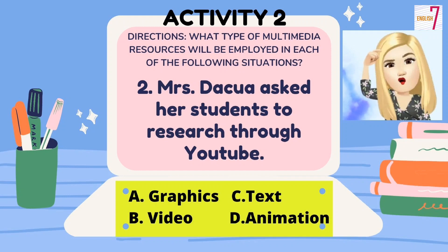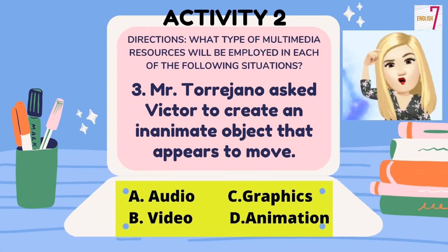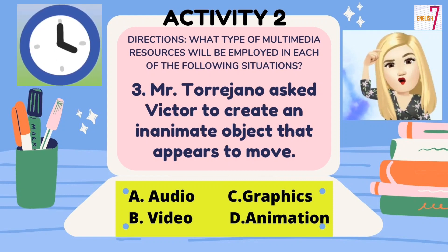Number 2 choices: A. Graphics, B. Video, C. Text, D. Animation. Number 3: Mr. Torrihano asks Victor to create an inanimate object that appears to move. A. Audio, B. Video, C. Graphics, D. Animation. Number 4: Janeline was asked to gather pictures for her photo gallery. Is it A. Animation, B. Video, C. Graphics, or D. Text?